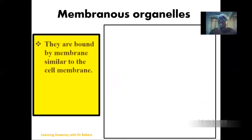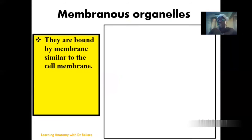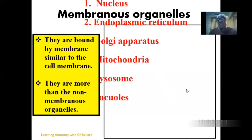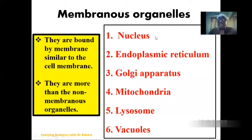Talking about membranous organelles — these organelles are bounded by a membrane. The membranous organelles are usually more in number than the non-membranous organelles, so you see just a few non-membranous organelles. The list of membranous organelles includes the nucleus, the endoplasmic reticulum, the Golgi apparatus, the mitochondria, the lysosome, and the vacuoles. We'll be looking at these structures one after the other to see their morphology and the functions that they exhibit.